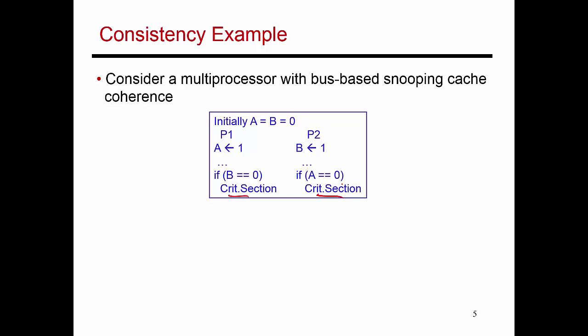But suppose you decided a lock was too expensive and you want to implement critical sections without using locks. You come up with a clever algorithm shown on this slide. The first thread on processor P1 sets A to 1, expressing its desire to enter the critical section.